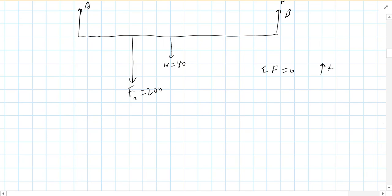So if I do net force equals zero, and I'll say up is positive. Well, then we have A plus B, minus 200 minus 40 equals zero, or duh, A plus B is 240. So you could all guess that, right? Problem is, I don't know what A or B are. So I need another equation. So that's where your net torque comes into play.